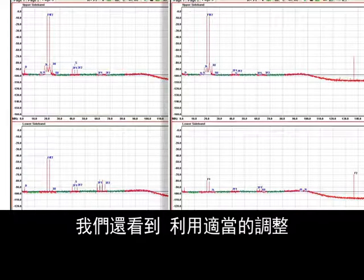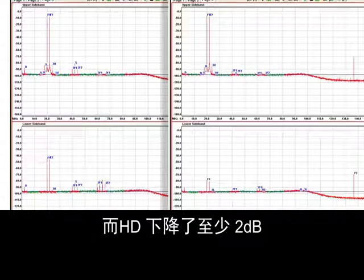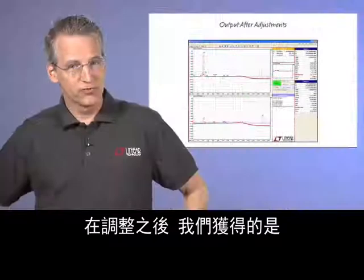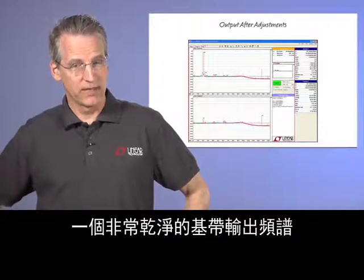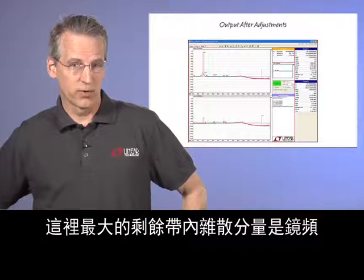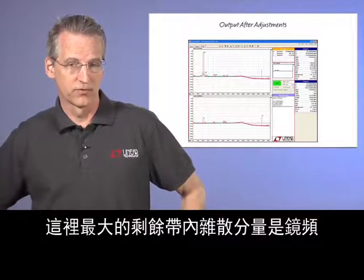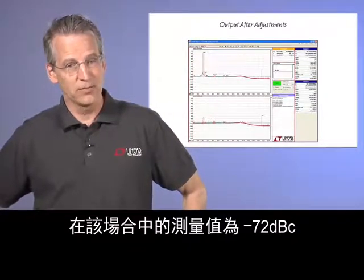We can also see that with proper adjustments, IM3 has dropped about 3 dB, IM2 and some difference products have dropped at least 10 dB, and HD has dropped at least 2 dB. After adjustments, what we are left with is a very clean baseband output spectrum, where the largest remaining in-band spurious component is the image, which in this case measures minus 72 dBc.